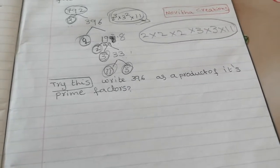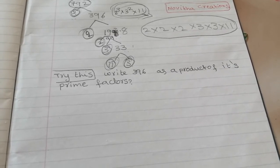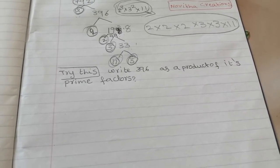Write 396 as a product of its prime factors. Try this and post your answer in my comment section. I will see you soon with another video.